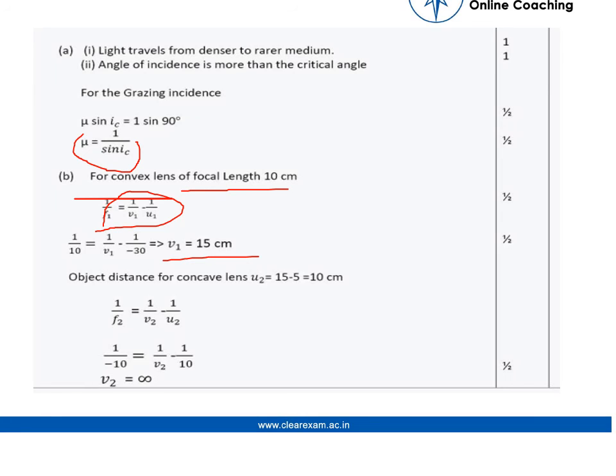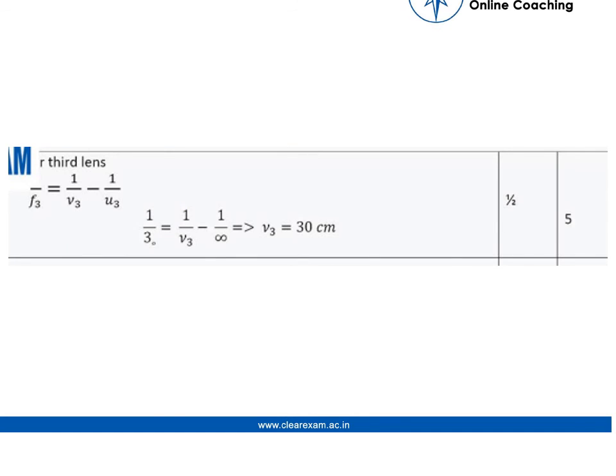Now the object distance for the second lens becomes 15 - 5 = 10 cm. Solving it again, we get 1/0 which is infinity. For the third lens also, by solving we get 1/f₃ = 1/v₃ - 1/∞, where the image distance v₃ becomes 30 cm.